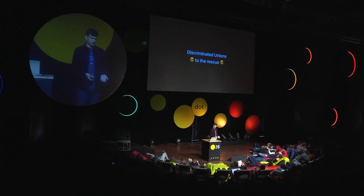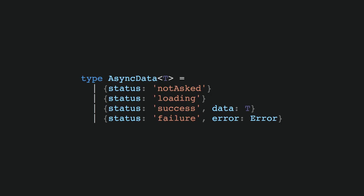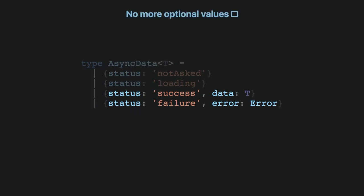Discriminated unions is a feature from TypeScript. I'm not going to go over the definition, just show how it looks. As the name implies, we have a union type now, and each of the cases has a status. This is the type for data now, and we are telling the compiler that it can use this status to understand that in some cases there may be other properties. The good thing is that we don't have optional values now — if we want to construct an object of this type and it's a failure, we need to provide the error as well. Otherwise, it doesn't compile. So we're removing all those errors we saw before.